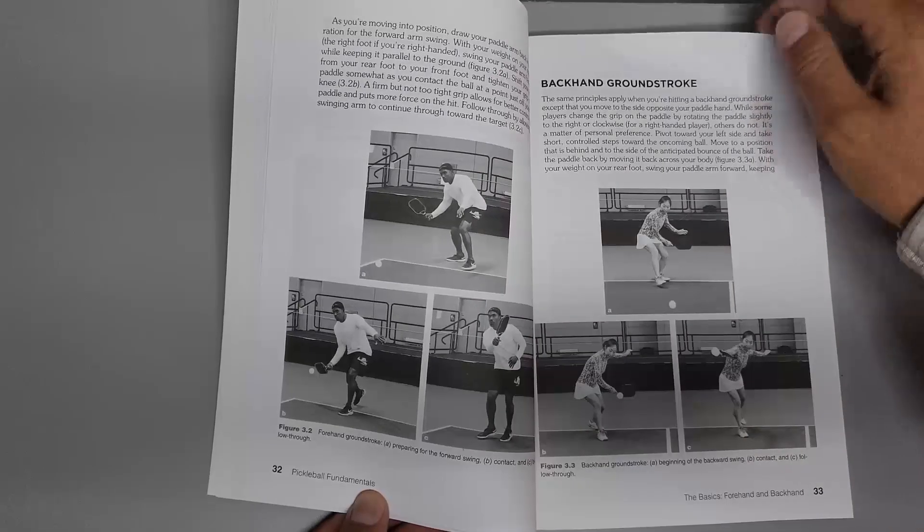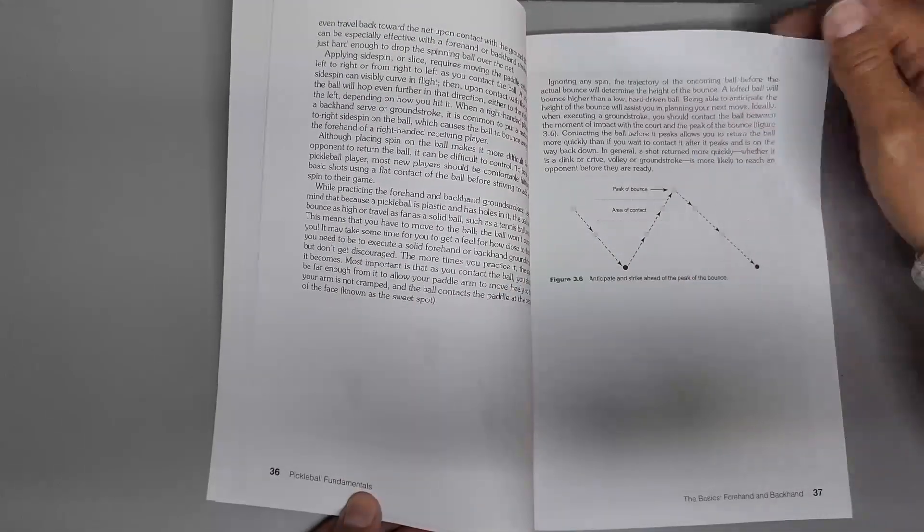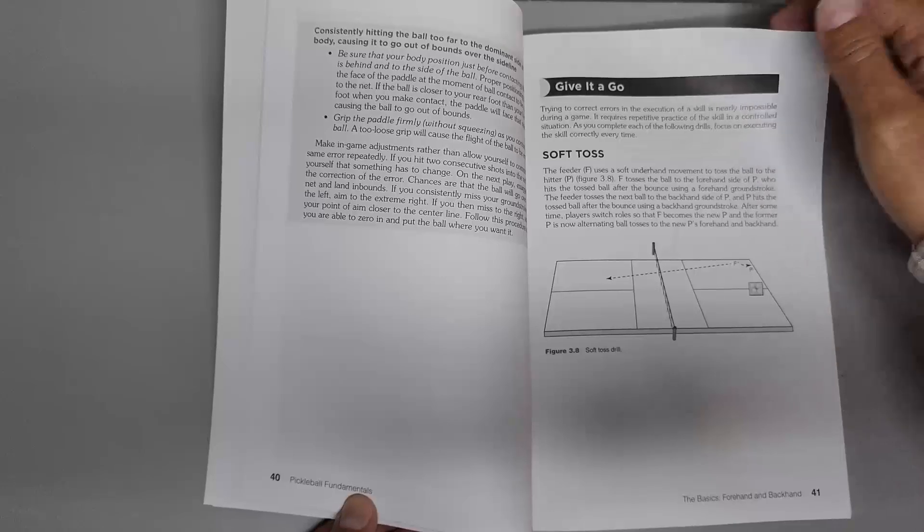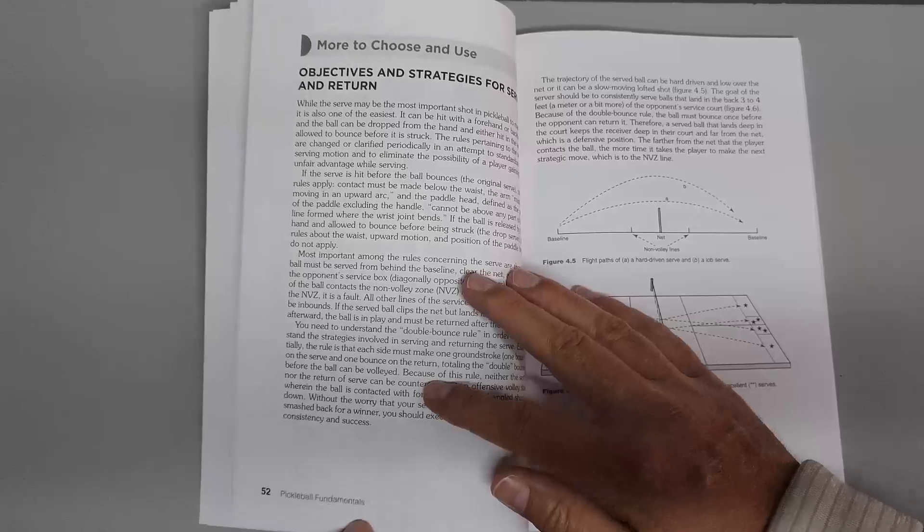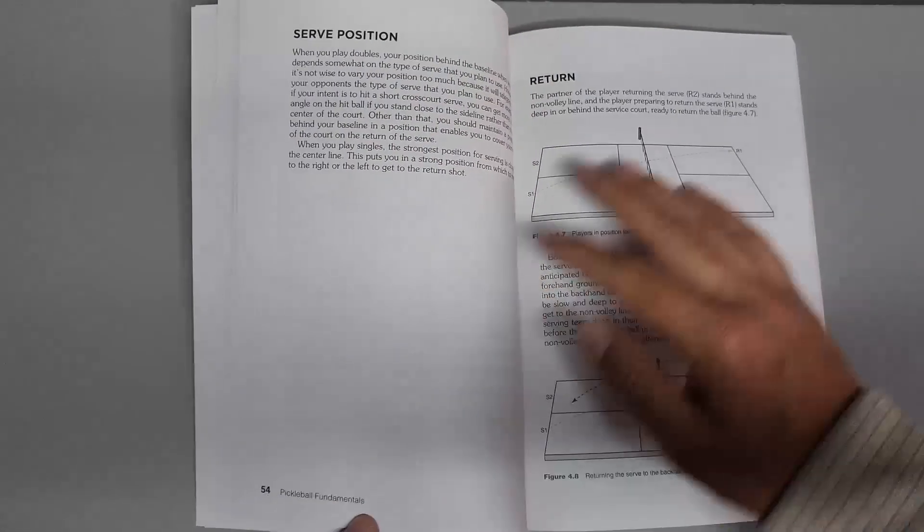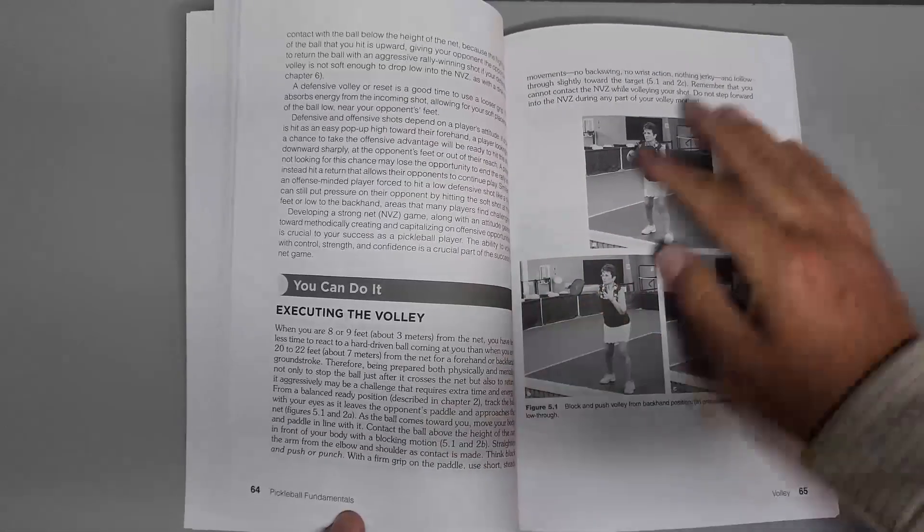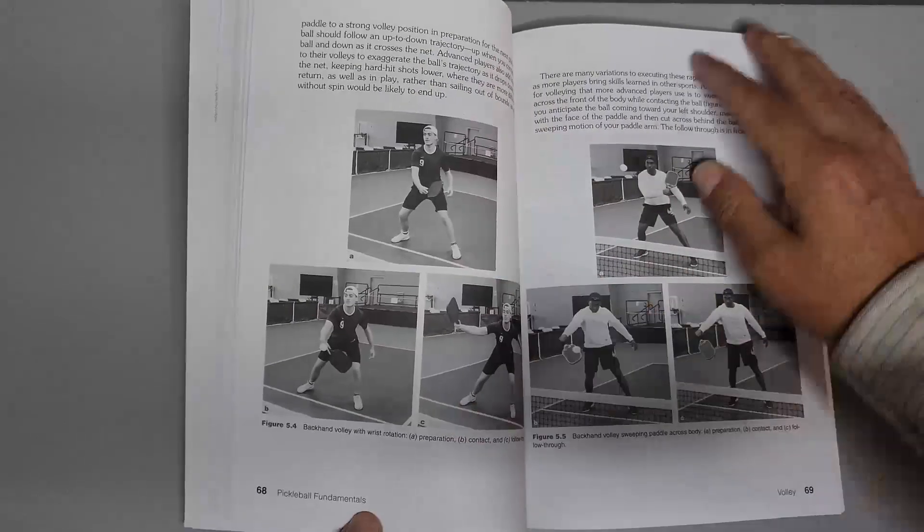The More to Choose and Use sections let you explore alternatives. There is a section titled Take It to the Court which shows you how to apply the new skill on the court, and the Give it a Go portion provides you with a drill or activity to own or expand the fundamental techniques outlined in each chapter.